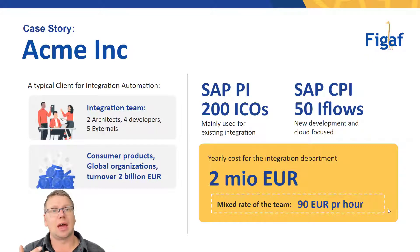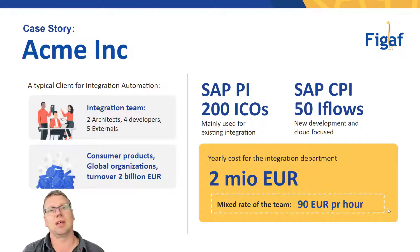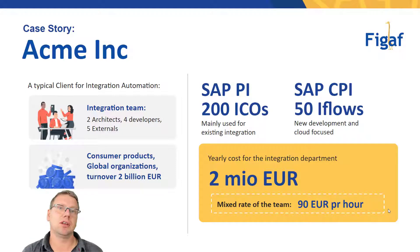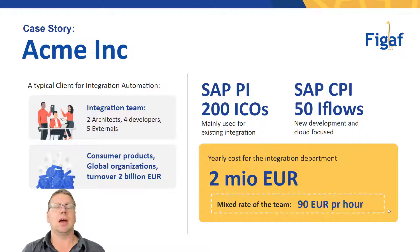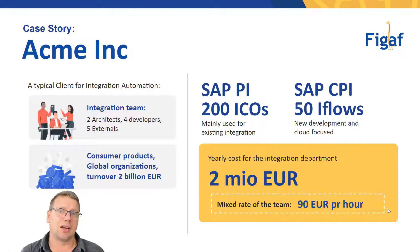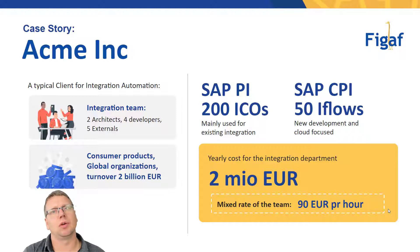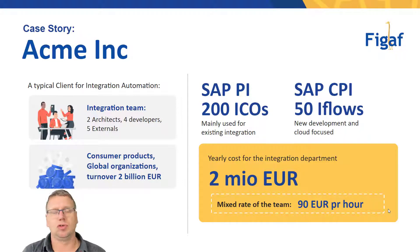In this we will be using a typical client, Acme Inc. It's a team of two architects, four developers and five externals. It's a consumer goods company with a global organization and a turnover of 2 billion euros. They are using SAP PI and they currently have around 200 IQOs in production. They're also working on SAP CPI where they currently have 50 iFlows, and that's where all new development is going. The current cost of the integration department is 2 million euros and the mixed rate of the team is 90 euros an hour.